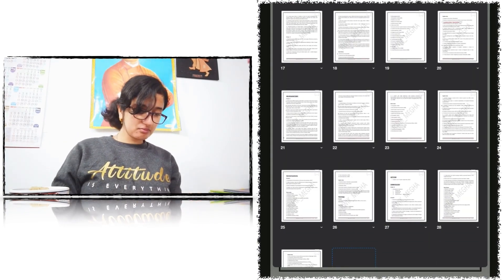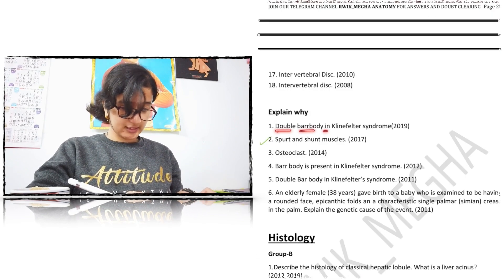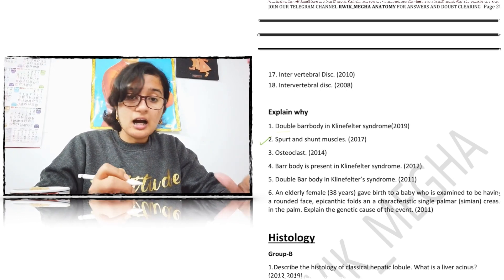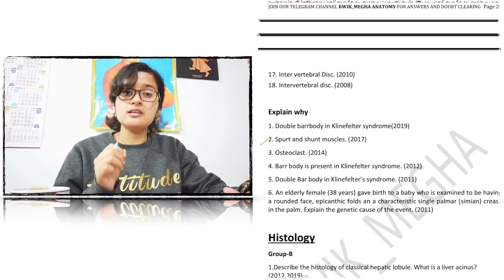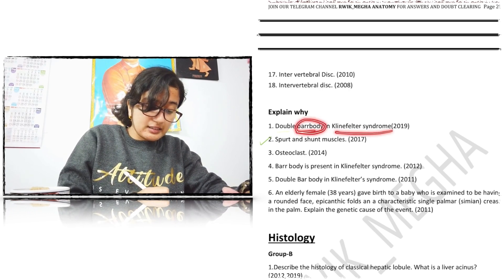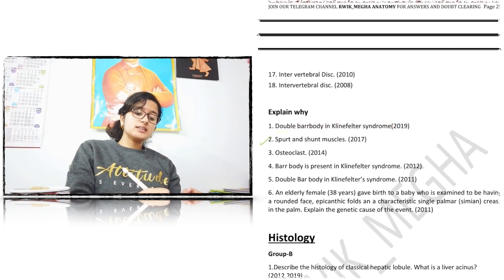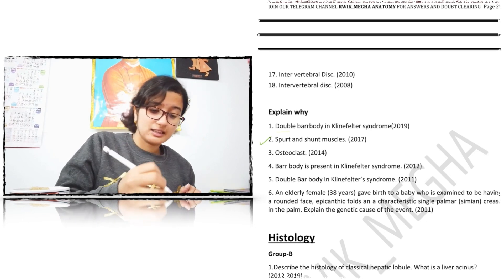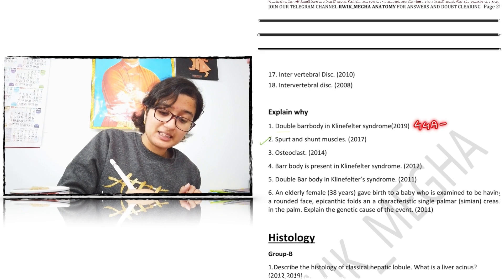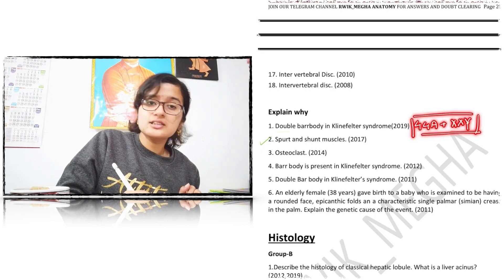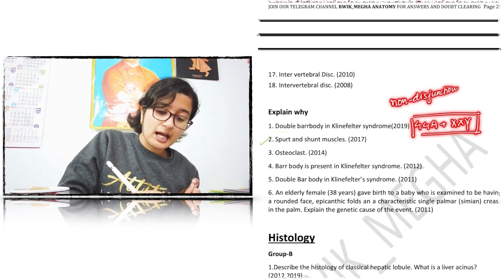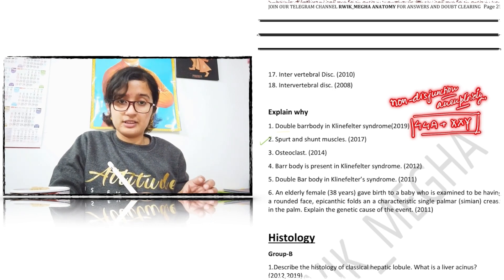Let's start with general anatomy. The first question reads: 'Double Barr body in Klinefelter syndrome.' For this kind of question, we have to first describe the unknown terms. The unknown terms in this question are Barr body and Klinefelter syndrome. Klinefelter syndrome is a genetic disorder in which the baby has the genetic configuration 44A + XXY, and this occurs due to non-disjunction of chromosomes, which leads to aneuploidy.